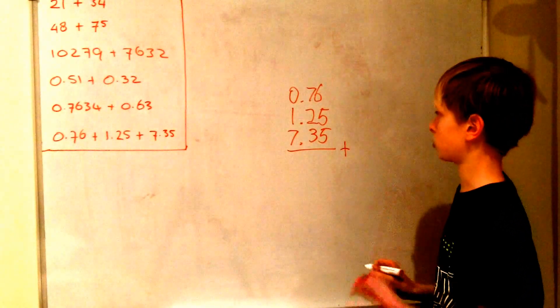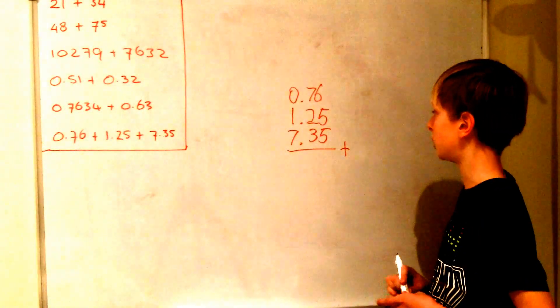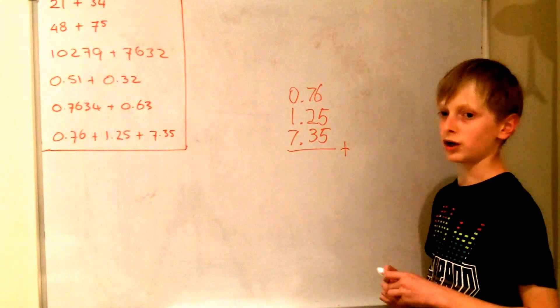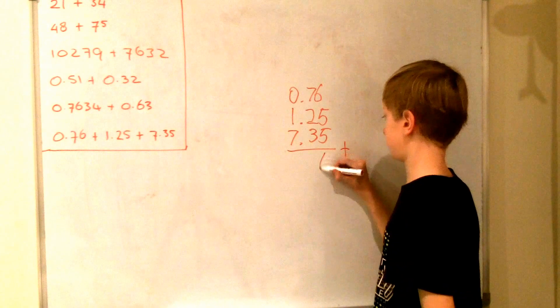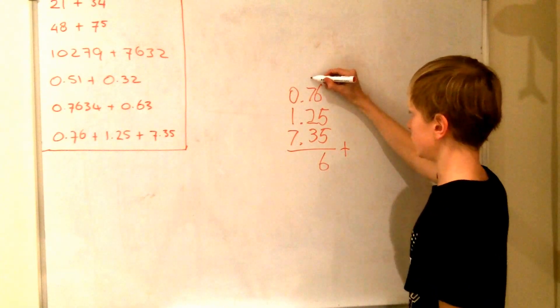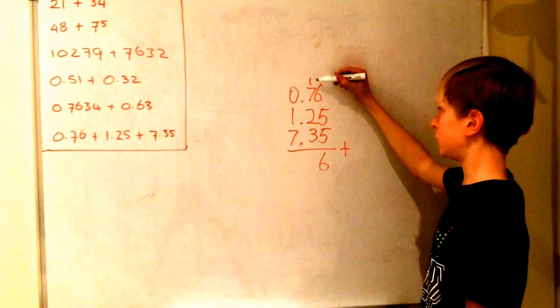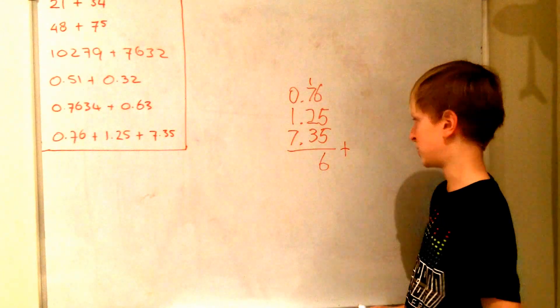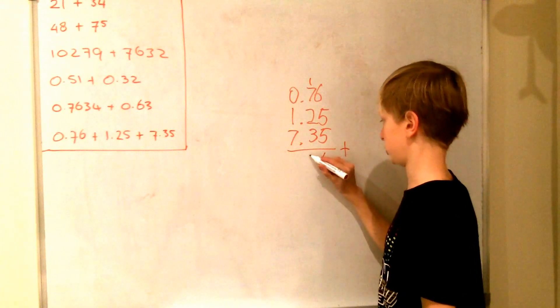So now we just add those numbers together. So we get 6 and 5 is 11. Plus 5 is 16. So we write the 6 here and the 1 up here again. So 1 plus 7 is 8. Plus 2 is 10. Plus 3 is 13.